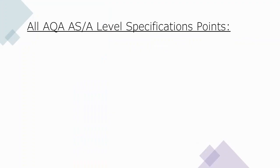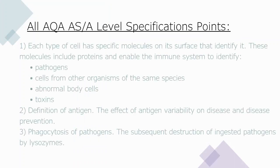The first specification points that all AQA AS and A-level candidates need to know is that each type of cell has specific molecules on its surface that identify it. These molecules include proteins and enable the immune system to identify pathogens, cells from other organisms of the same species, abnormal body cells, and toxins. You also need to know the definition of an antigen and the effect of antigen variability on disease and disease prevention.